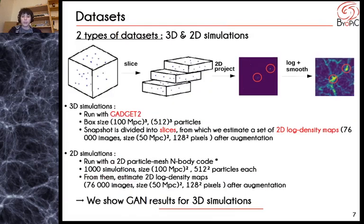In our work, we train both of our networks on two types of images. The first type is built from slices taken from a GADGET-2 3D N-body simulation, from which we compute a 2D density field that we log-transform to make the structures stand out, as shown above. The second type of images is also a set of 2D log density fields, but built from 2D simulations. Both sets count 76,000 images of size 128×128 pixels. I'll be showing the GAN's results for the images from 3D simulation slices, and the autoencoder's results for the images from 2D simulations.